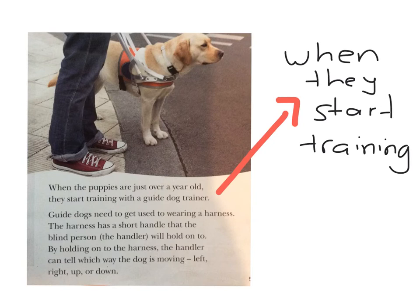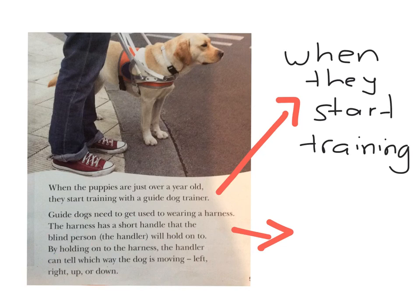Let's look at this last paragraph. It says guide dogs need to get used to wearing a harness. The harness has a short handle that the blind person — the handler — will hold onto. By holding onto the harness, the handler can tell which way the dog is moving: left, right, up or down. That paragraph is about the harness and the equipment that the guide dog has. All of the ideas and sentences about the harness are put together into one paragraph.